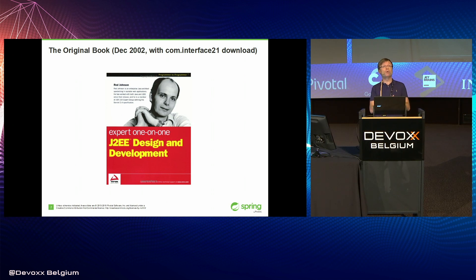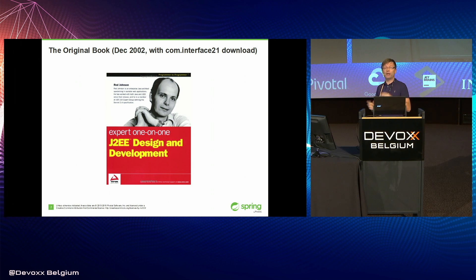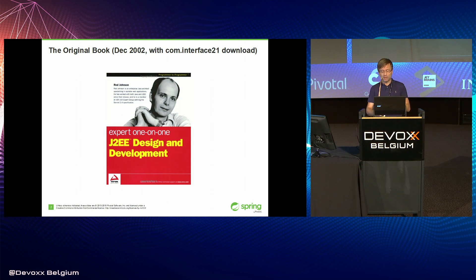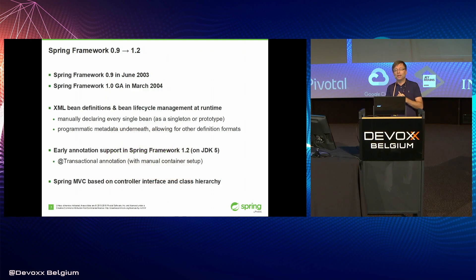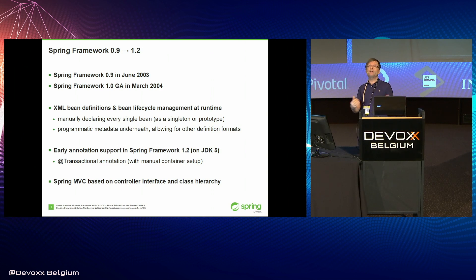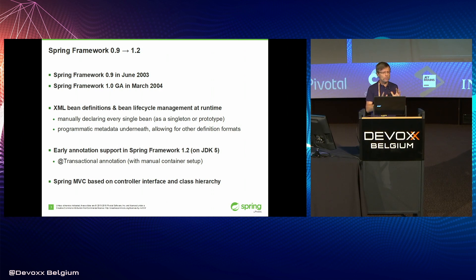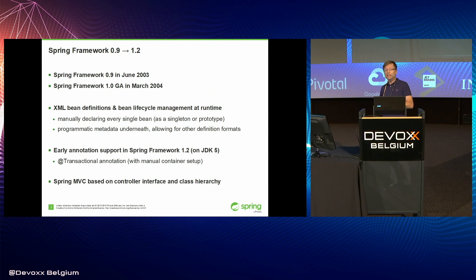We got into a manic phase of completing that basic idea of a framework. Many of the pieces we now know — Spring AOP, the factory bean model, many other pieces — actually came after the book in that first half of 2003, and it turned into the first public download, Spring Framework 0.9, under that name in June 2003, which was already pretty complete for what we initially envisioned.